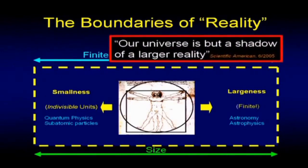Scientific American in June of 2005 ran an article that included this conclusion: that our universe appears to be but a shadow of a larger reality. That's not a philosopher talking — that is Scientific American's conclusion from the fact that our constants in physics seem to be changing. If they're changing, even slightly, they imply that the real reality is something larger than we're experiencing.